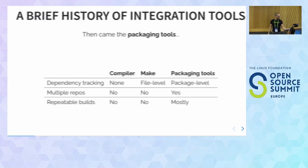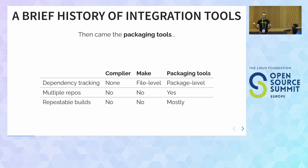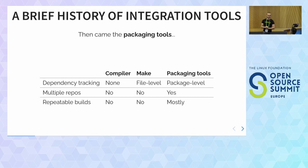Fast forward to the 1990s — Friends is massive, and the open source community and free software movement really get going. For the first time we've got distributed teams working on software: a team working on the kernel, a team working on the compiler, a team working on the desktop. It becomes more important than ever to integrate different components together.